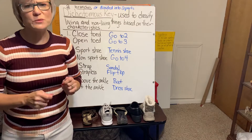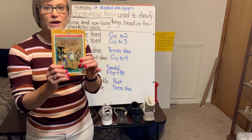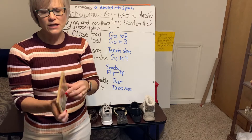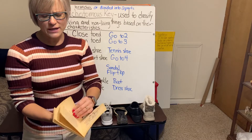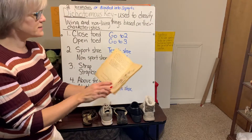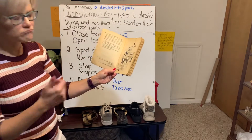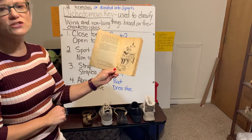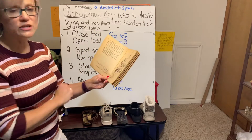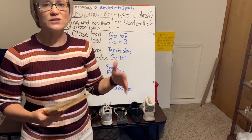We've used simple dichotomous keys in the past, and especially if you have ever read a choose-your-own-adventure book. These were one of my favorites because I got to choose what the main character did. As I read along, I would get to a page where I had to make a choice — for example, if you turn your robot on right away, turn to page 5; if you paint him first, turn to page 6. Those two choices are kind of like what a dichotomous key is.